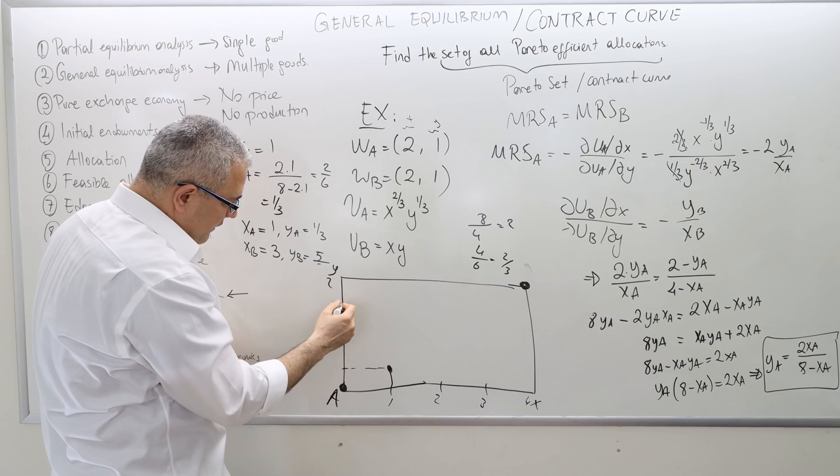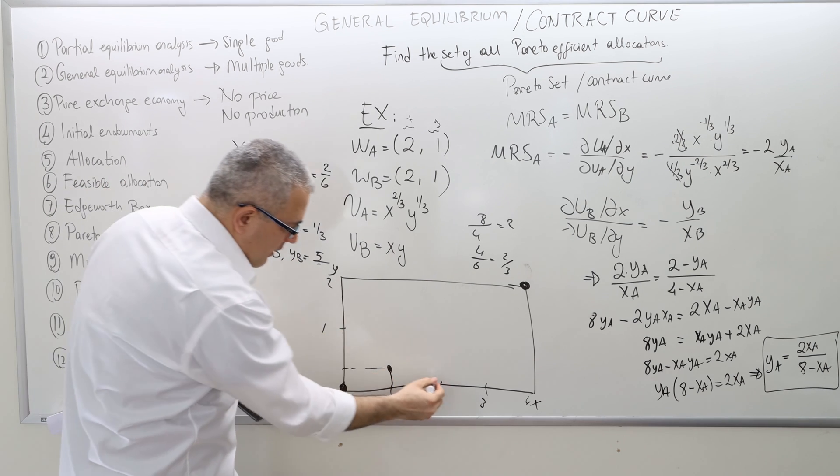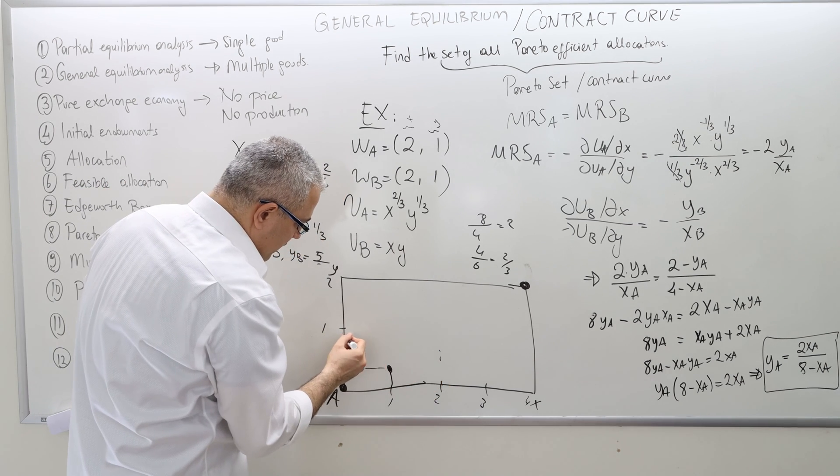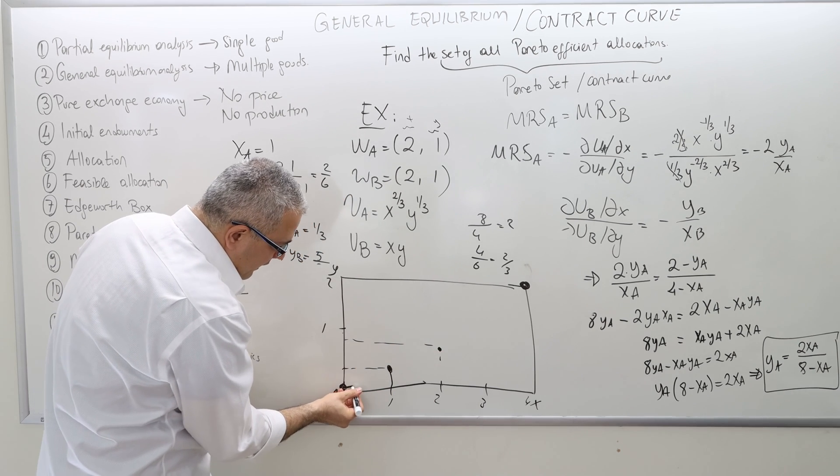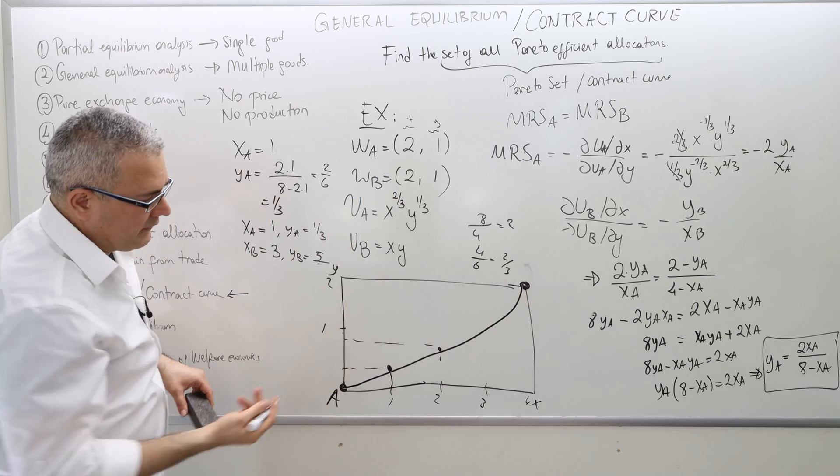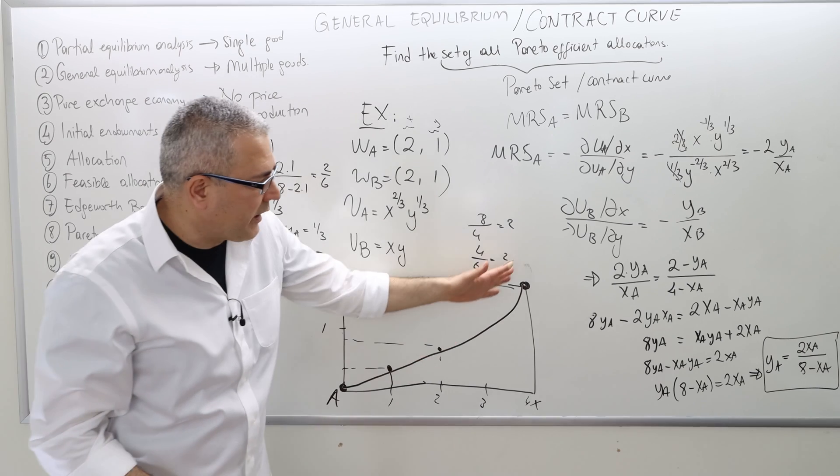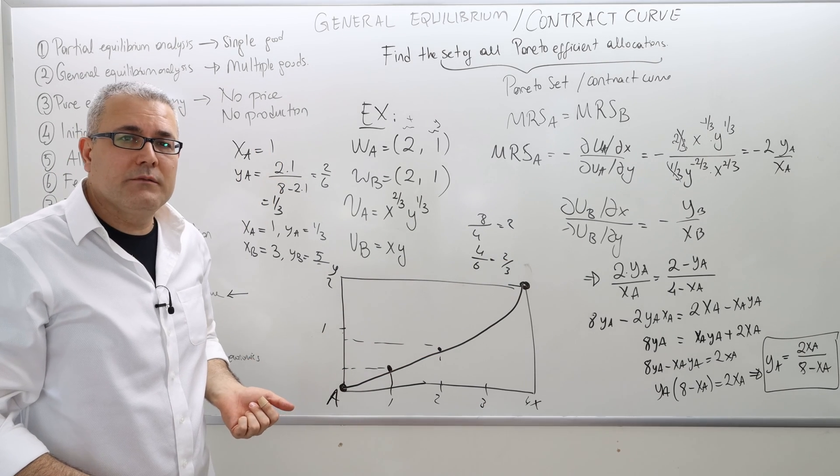And so on. So I think you got the idea. Something like this. So this is what the contract curve in this problem will look like. I hope that was clear. Thank you.